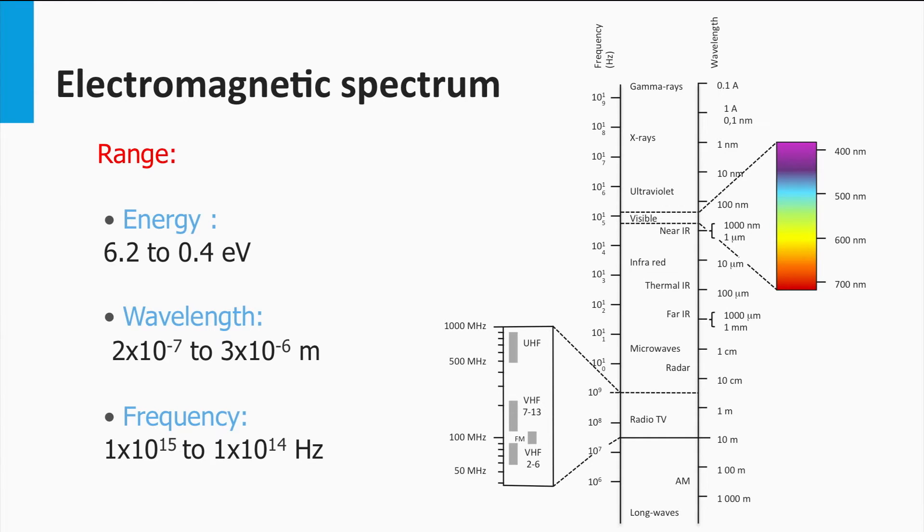Electromagnetic waves exist in many spectral ranges. The visible light spectrum, which comprises of the electromagnetic waves we can see with our human eyes, are only a tiny part of the entire spectrum. The visible spectrum ranges from wavelengths of 400 nm up to 700 nm, which corresponds to frequencies in the order of 10 to the 15 Hz.